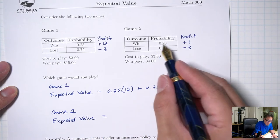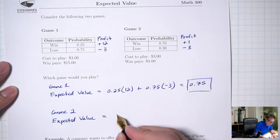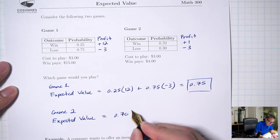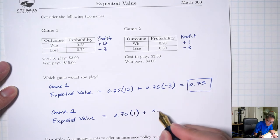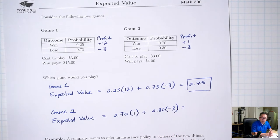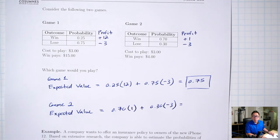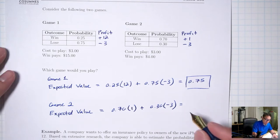For game two: probability times profit plus probability times profit. That's 0.70 times one plus 0.30 times negative three, and I get negative 0.2.